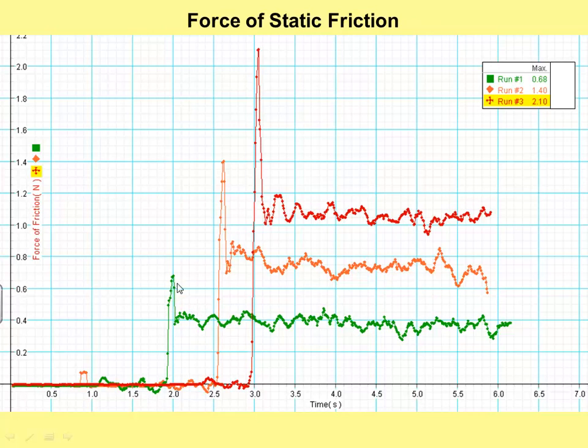But this part right here, the spike, was the static friction. This was how much force it needed to overcome before it could get it going. So the top of the spike was the maximum amount of static friction.